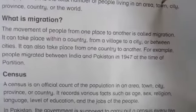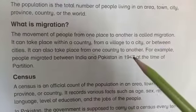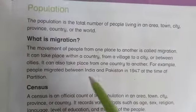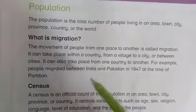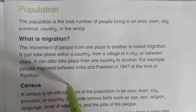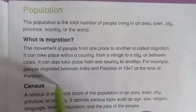For example, in the Social Studies book for Grade 4, the example given is of migration between India and Pakistan in 1947 at the time of Partition. People migrated — they were living in India but they are Pakistanis, so they migrated.